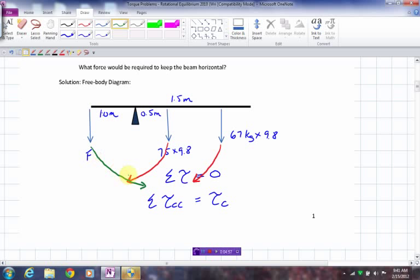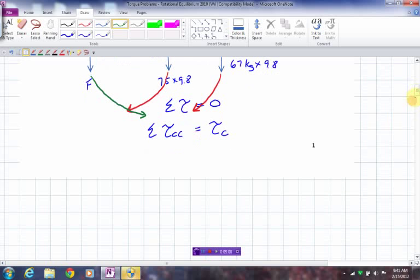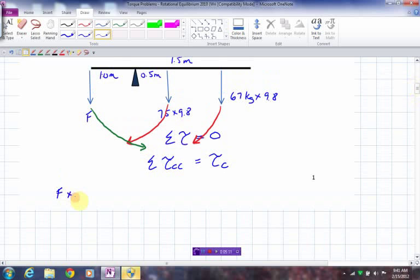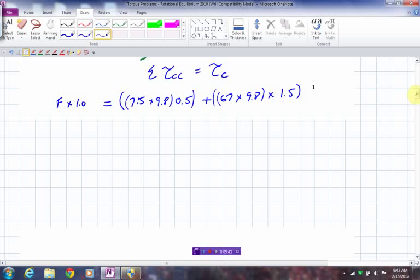So, that means that if I do this correctly, my counterclockwise torque will be equal to force times lever arm length. That would be 1.0 meters. And that's going to equal 7.5 times 9.8 times 0.5 plus 67 times 9.8 times this lever arm length of 1.5. Now, if you look at that, the only unknown in this whole thing is the F force. What you then have to do is do the arithmetic, and it should work out for you quite well.